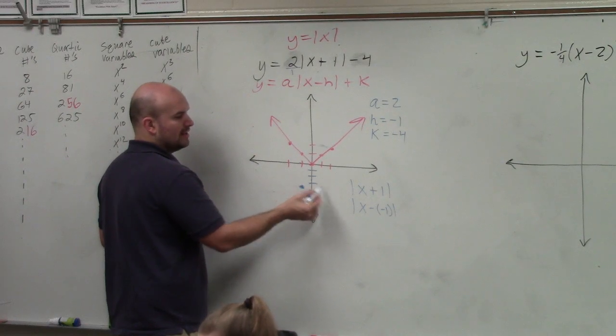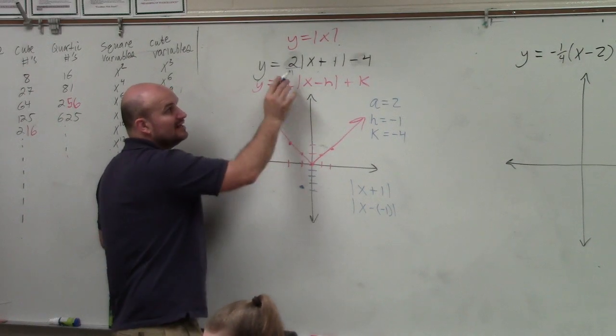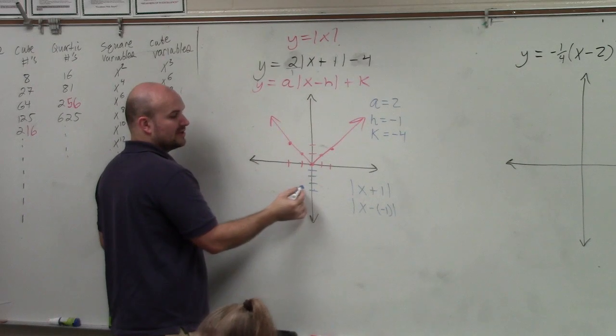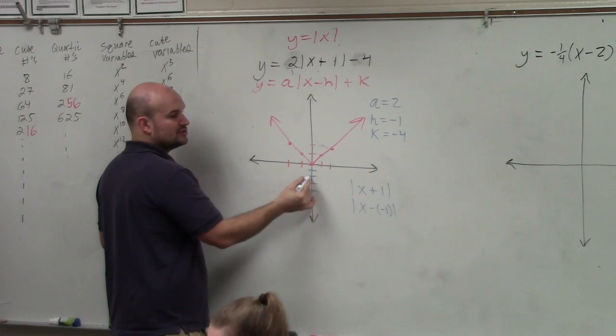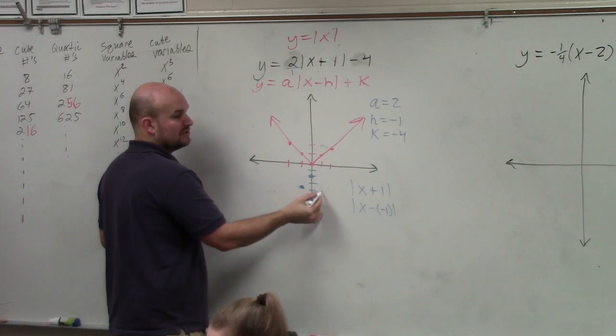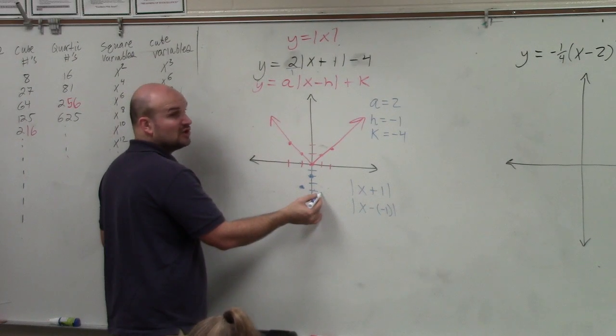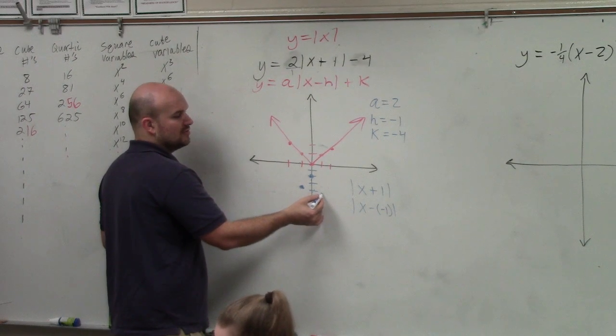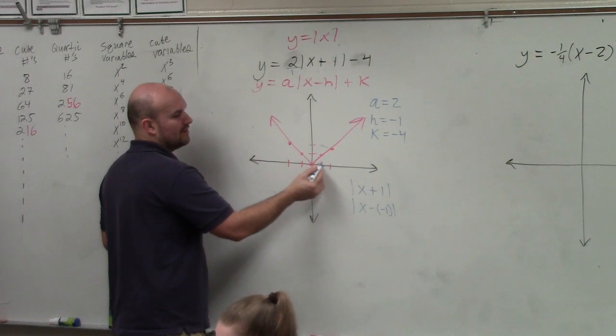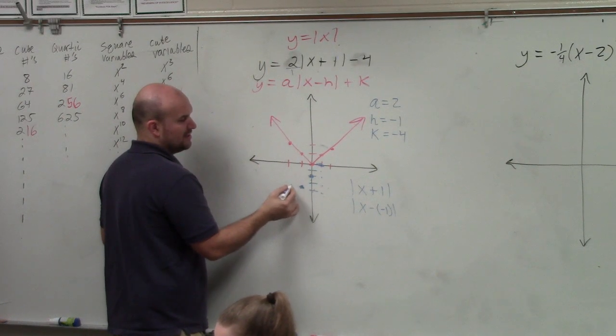So instead of going up 1 over 1, up 2 over 2, like we did here, it's being multiplied by 2. So we're going to go over 1 up 2. Over 2, instead of going up 2, we're going to go up 4, because you're multiplying it by 2. So it would be 1, 2, 3, 4. And then we could do the same thing over here. Over 1 up 2, over 2 up 4.